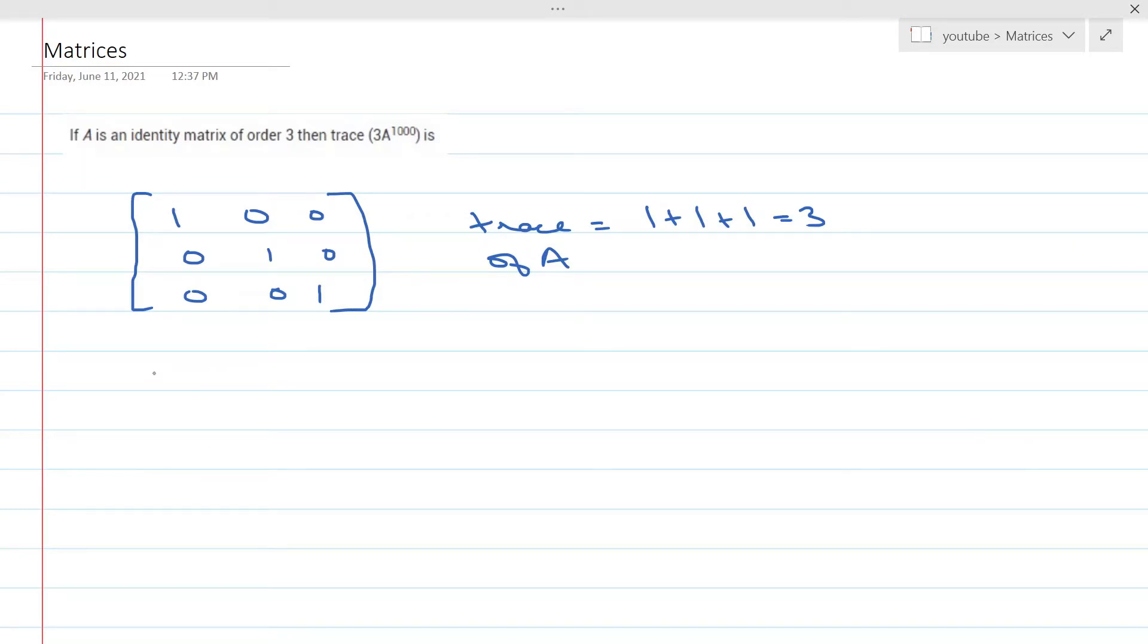So now coming back to the question, which is 3 into A to the power 1000. So first things first, if A is an identity matrix, we know that identity matrix power n is always going to be equal to the identity matrix.